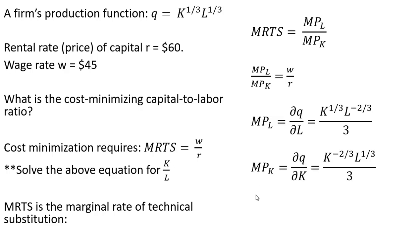Getting now the marginal product of capital: bringing down the 1/3 in front of the exponent on K, and then 1/3 minus 1 on the exponent on K leaves K raised to the minus 2/3 power.